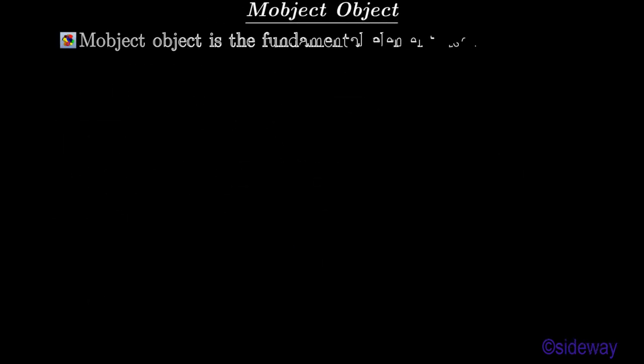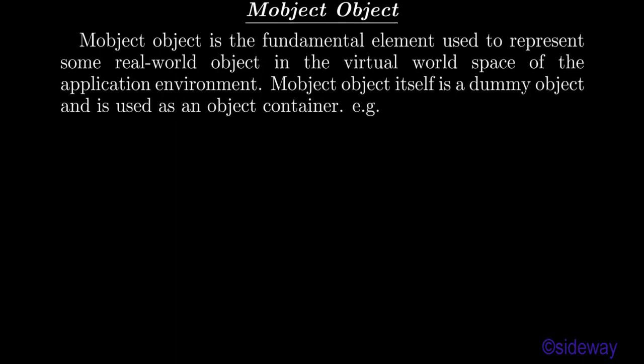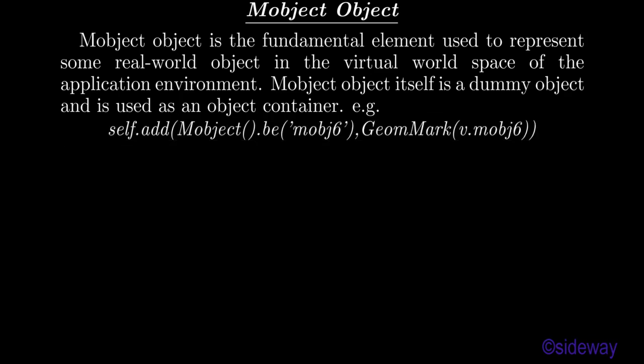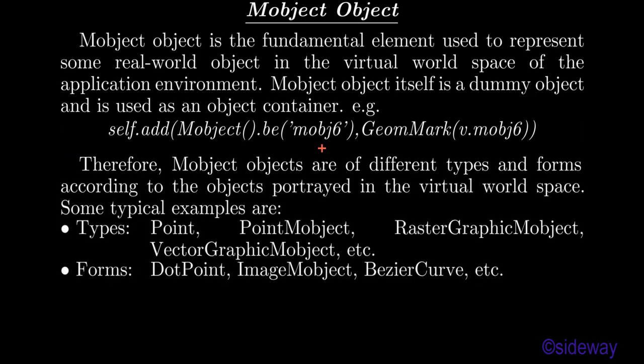An object (Mobject) is the fundamental element used to represent some real-world object in the virtual world space of the application environment. The Mobject itself is a dummy object used as an object container. Mobject objects are of different types and forms according to the objects portrayed. Some typical examples — types can be: PointMobject, RasterGraphicMobject, VectorGraphicMobject, etc. Forms can be: dot point, ImageMobject, Bezier curve, etc.